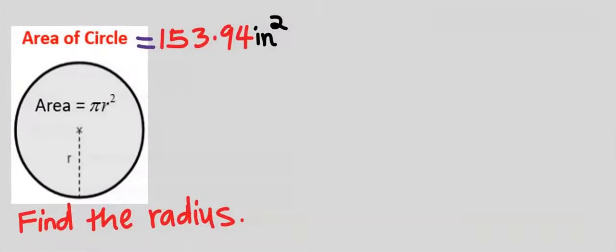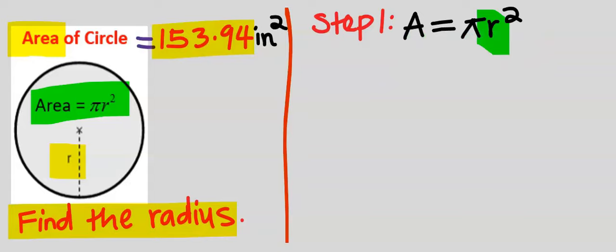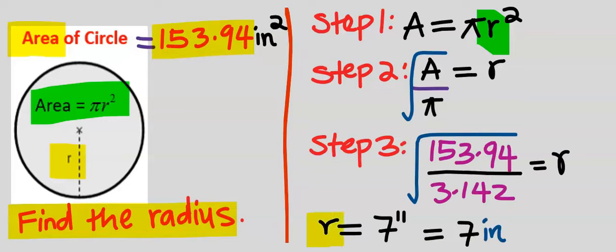Next, the area of the circle is 153.94 inches squared and we want to find the radius. The first step is to write out the area formula, pi r squared. The next step is to make r the subject, then substitute and solve — the radius is 7 inches.